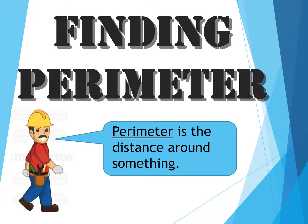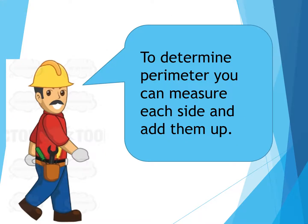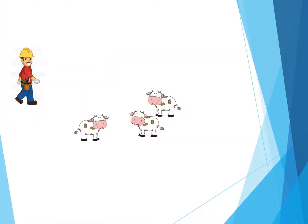Finding Perimeter. Perimeter is the distance around a shape, or the distance around something. To determine perimeter, you can measure each side and then add them up.